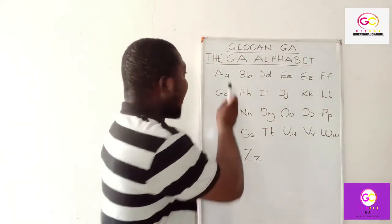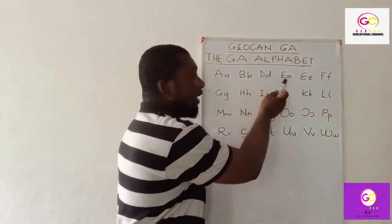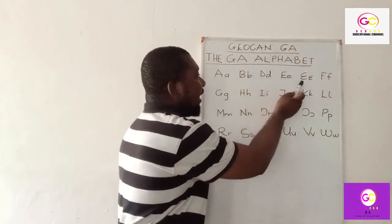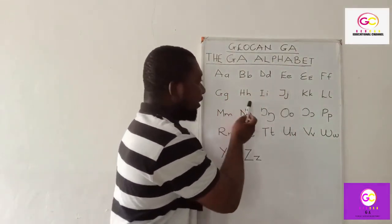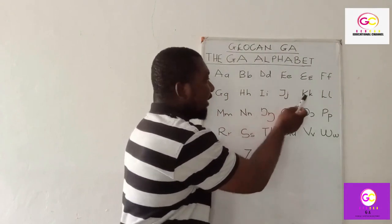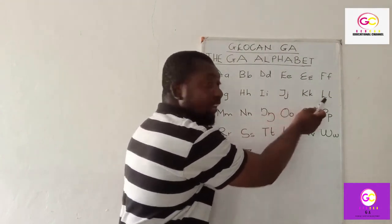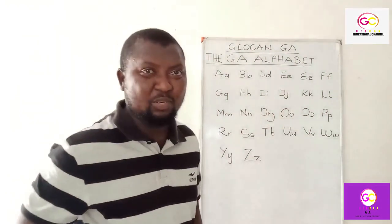So it's easy, right? Let's review: A, B, D, Eh, Eh, Foo, G, H, I, J, K, O. I hope you got that one. So let's continue.